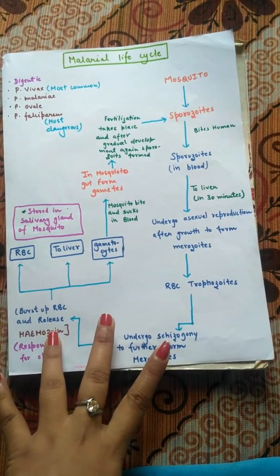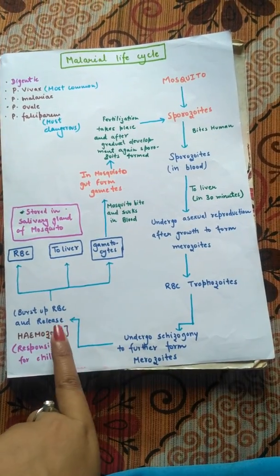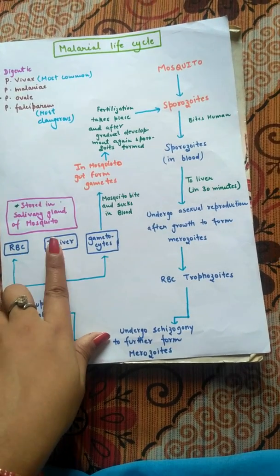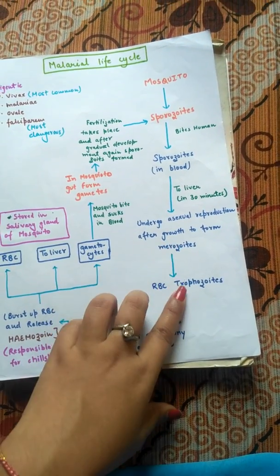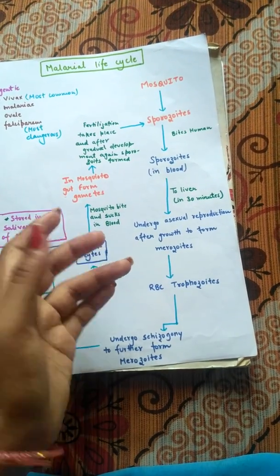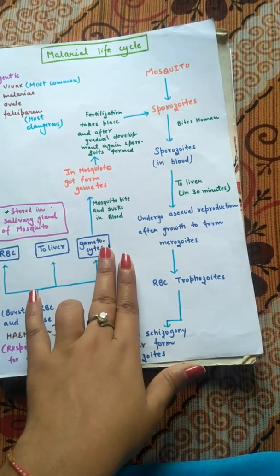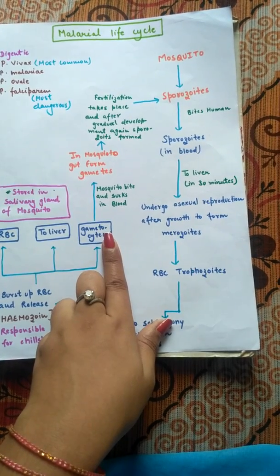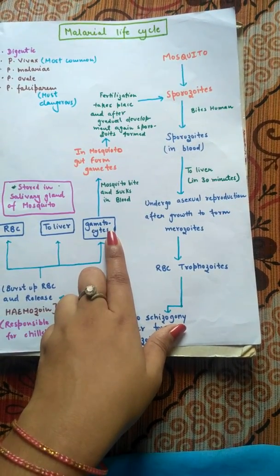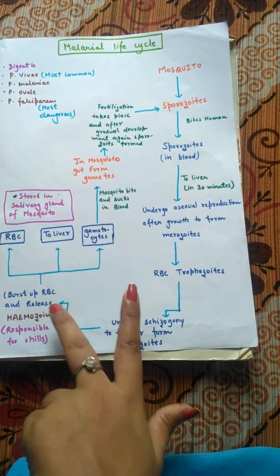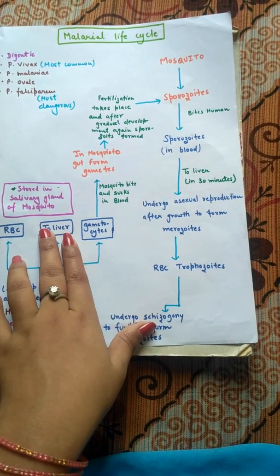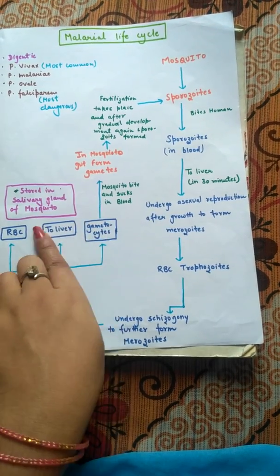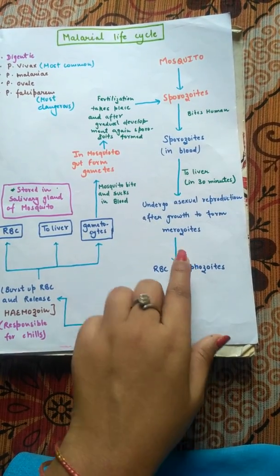After the release of hemozoin, there are three fates for the merozoites. They can go either back into the RBCs, go to the liver again to form merozoites and trophozoites, or they can form gametocytes. As the name suggests, gametocytes are cells which can form gametes. These three fates all occur inside the human body.